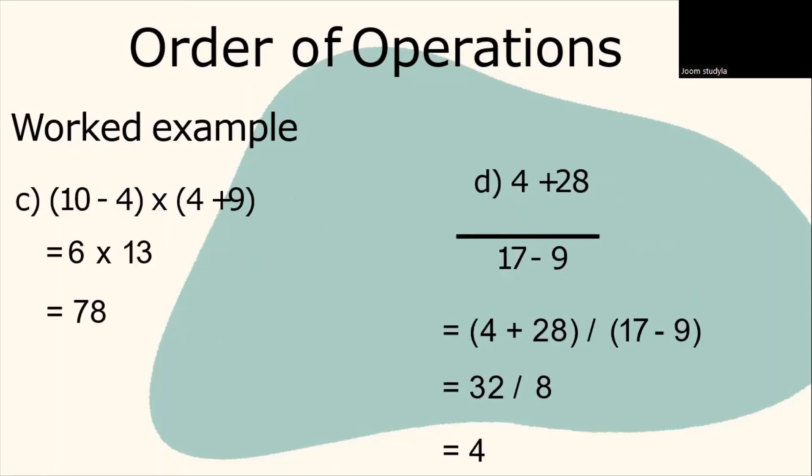And then, we have the third example: (10 minus 4) multiplied by (4 plus 9). Based on order of operations, complete operation in grouping symbols first. You have to start from left to the right. 10 minus 4 is equal to 6 multiplied by 4 plus 9 equals to 13. So, 6 multiplied by 13 is equivalent to 78.